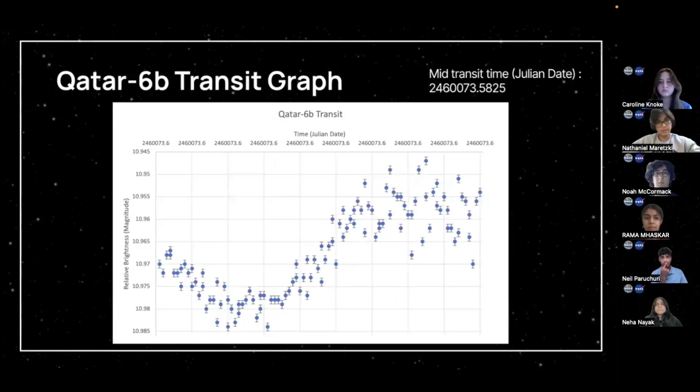This is Qatar 6b. This is its transit graph. As you can see at the very end, it all kind of scatters a little bit, and we think that's because a cloud went over the top of the telescope when it was observing. And its mid-transit time was 2460073.5825.